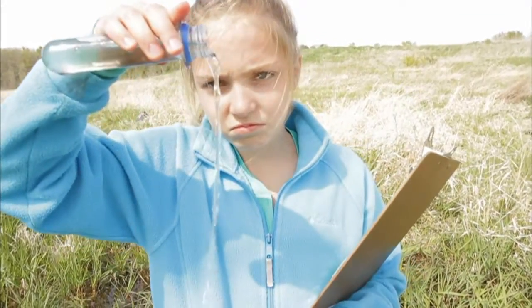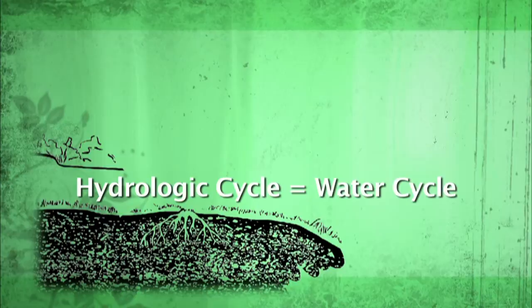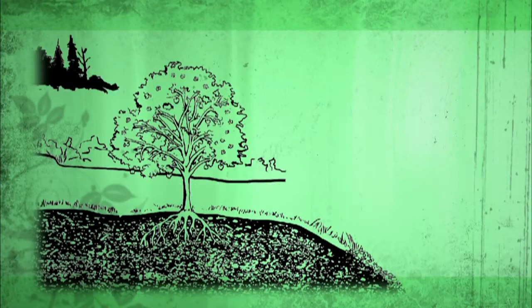So how does this water cycle work? The water cycle, or hydrologic cycle as our scientist friends call it, can be broken up into three major stages.